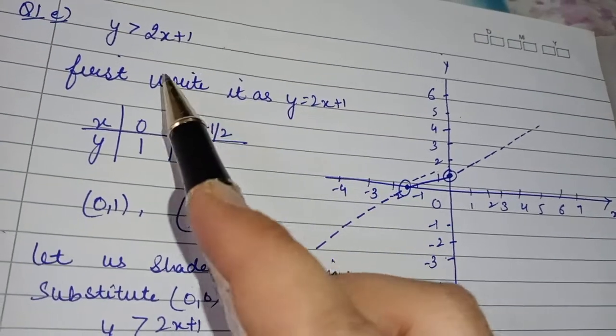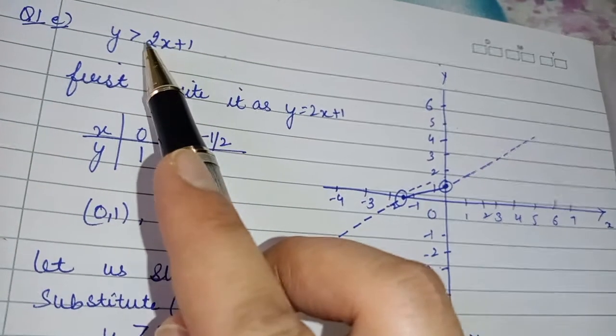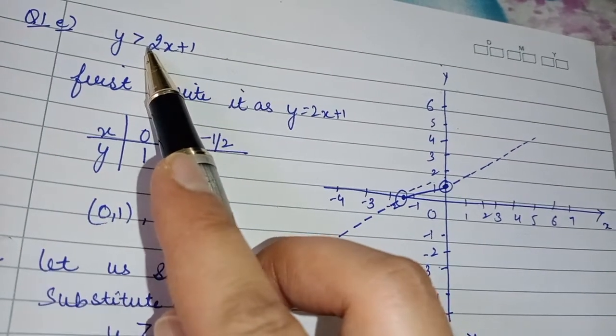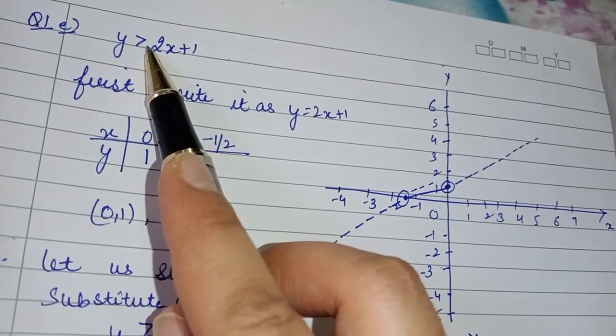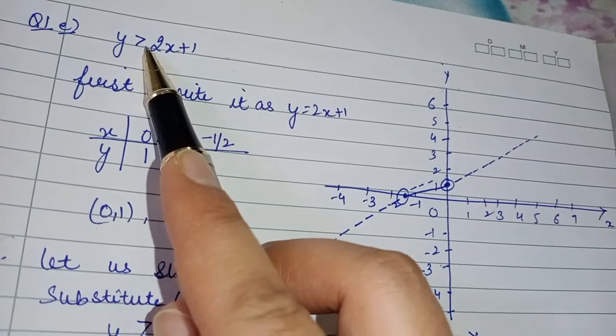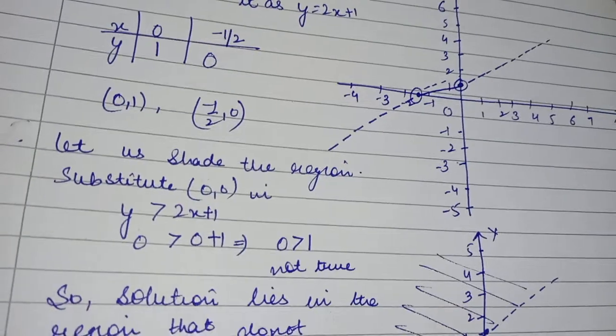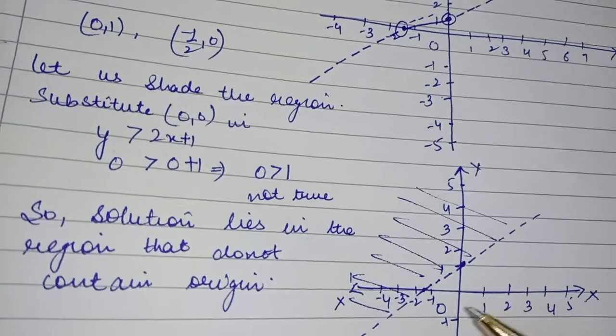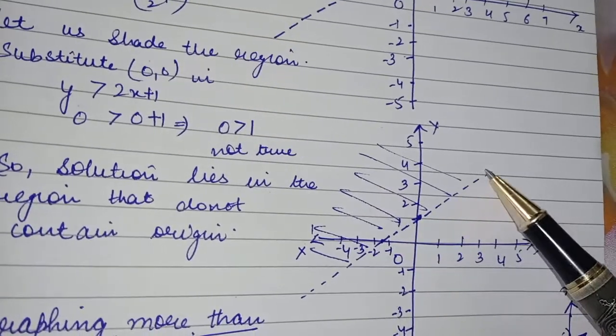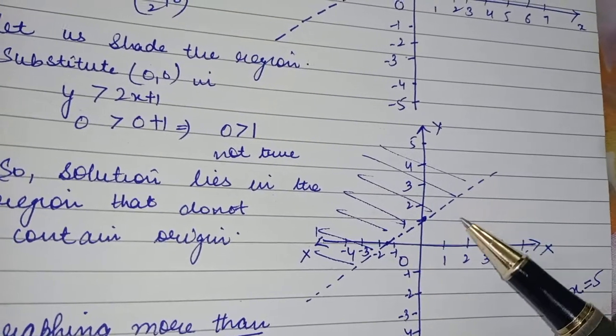Now here, we don't have the equality sign — it is a strict inequality. So it will be a dotted line. Let us draw it again as a dotted line.